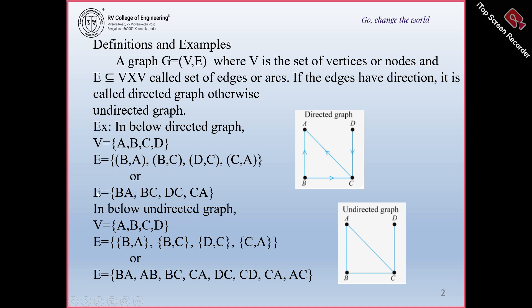The edges will be represented as ordered pairs: (B, A), (B, C), (D, C), and (C, A). Here C is the starting vertex and A is the ending vertex. This is regarding your directed graph.